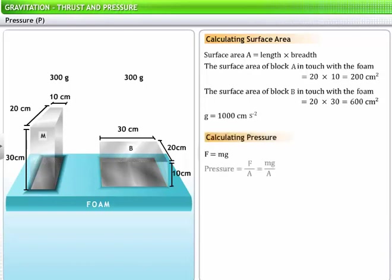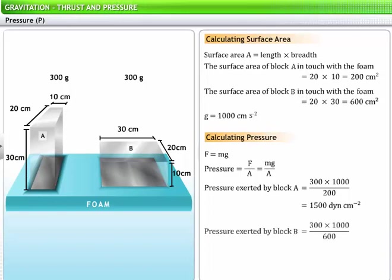Using the formula for pressure, we can now calculate the pressure of blocks A and B on the foam. The pressure of block A on the foam is 1500 dyne per centimeter square. The pressure of block B on the foam is 500 dyne per centimeter square.